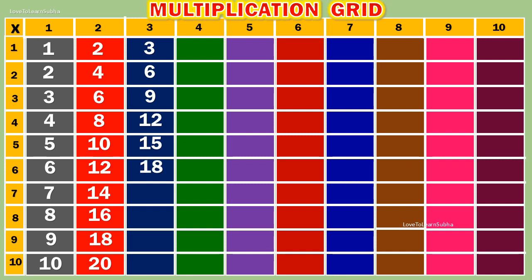3 6s are 18. 3 7s are 21. 3 8s are 24. 3 9s are 27. 3 10s are 30.